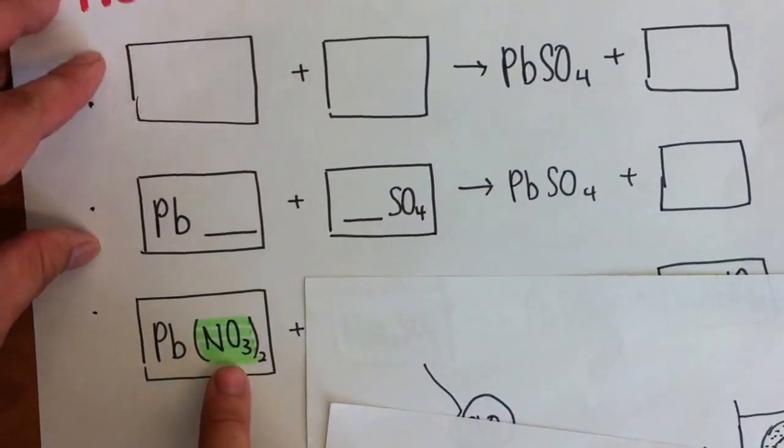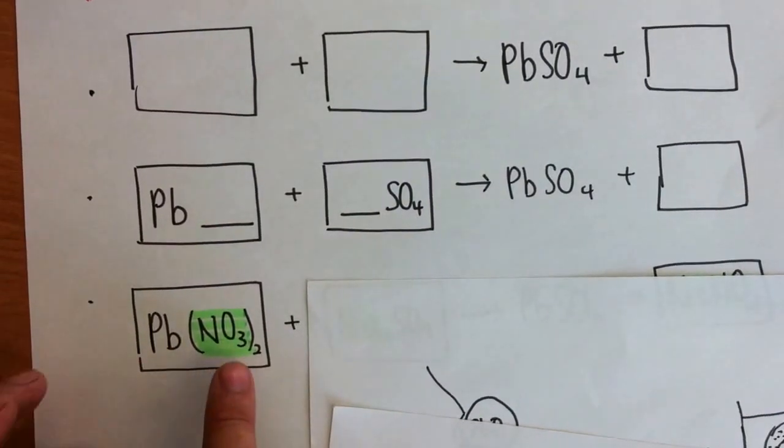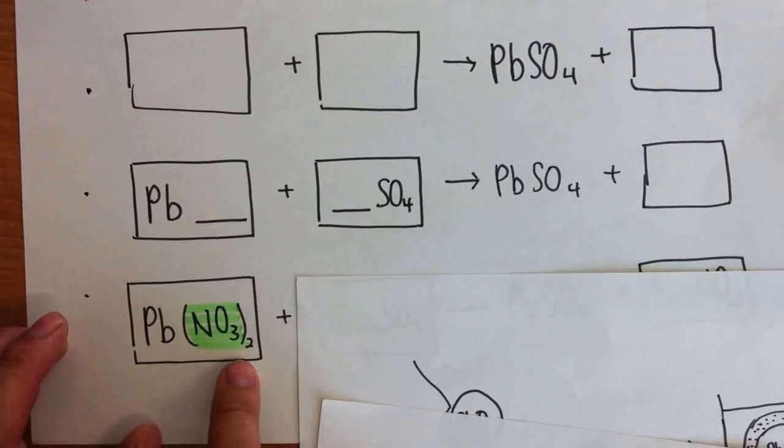Easiest choice is always choose a nitrate. Why? Because all nitrates, as you learn in the state symbol, are aqueous, can dissolve.